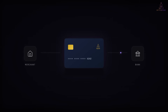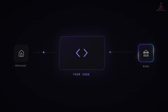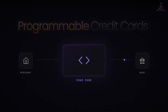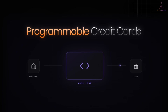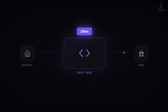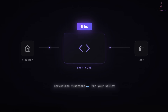But what if there was a step in between? What if, right before your bank says yes or no, your own code could run? That's the idea behind programmable credit cards. You get an API, you get webhooks, you get to write rules that execute at transaction time — in that 300ms window — deciding whether a purchase should go through. It's basically serverless functions, but for your wallet.